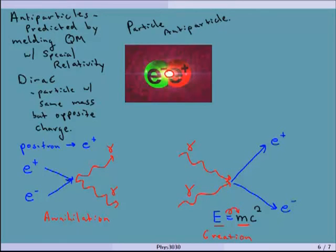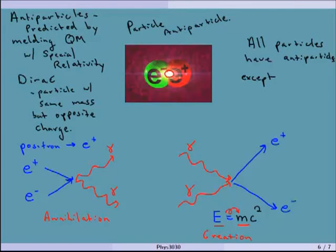All of those particles have antiparticles — so there are anti-quarks and things like that. Except the bosons — those intermediate bosons don't have antiparticles. So it's all of the things that make up matter, not the ones that are exchanged in between.